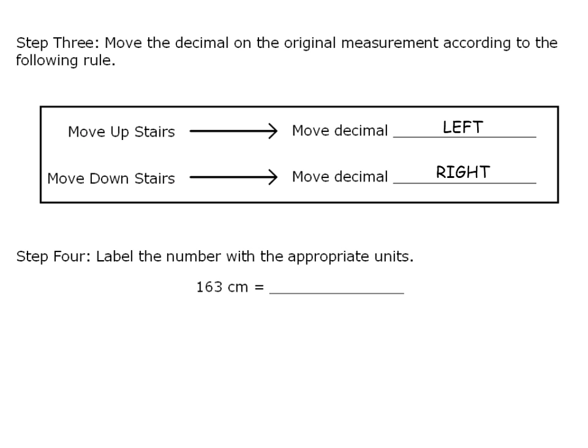So we start with our original measurement, 163 centimeters. We don't see a decimal point there, but we really know that it is here after the unit's place, it's implied. And we moved two spaces to the left, so we need to move one, two spaces to the left in the number.